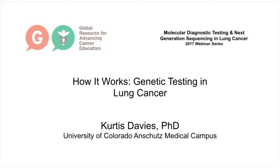A few years ago in lung cancer, it was sufficient to test only a few genes for these mutations — specifically genes called EGFR and ALK, and more recently ROS1. It was sufficient to just test these three to guide clinical decision-making, because these were the only genes that, if mutated, could be directly targeted with available targeted therapies.